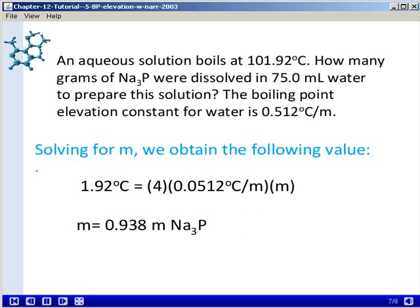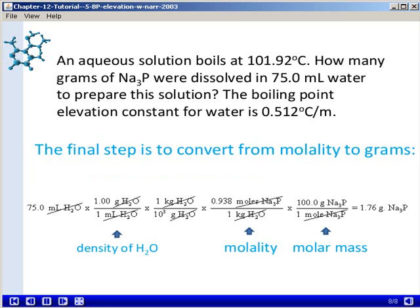Remember, the problem asks us for how many grams of sodium phosphide were dissolved in the 75.0 milliliters of water. So our final step is now to convert from the molality to grams.